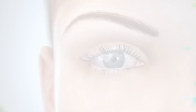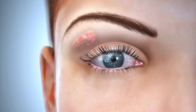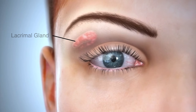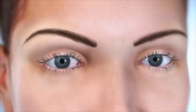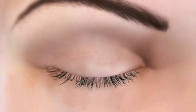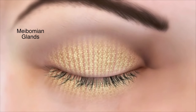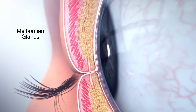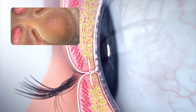The lacrimal gland, located above the eye, produces the aqueous layer by continuously releasing fluid that coats the eye's surface — it is what most people would consider the eye's natural moisture. The oily lipid layer is produced by the meibomian glands located within the eyelids. The lipid layer protects the eye's moistness and allows the eyelid to glide safely over the eye. The cells on the inner wall of the meibomian gland produce the oil in a normal eye.